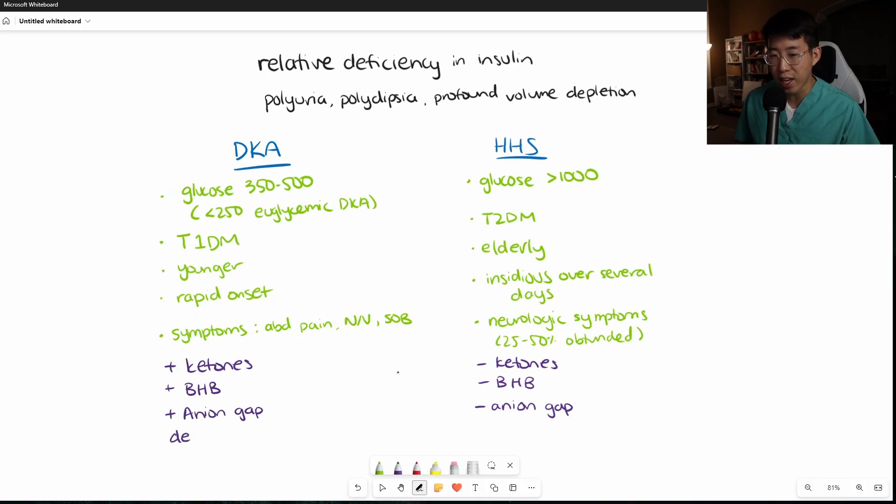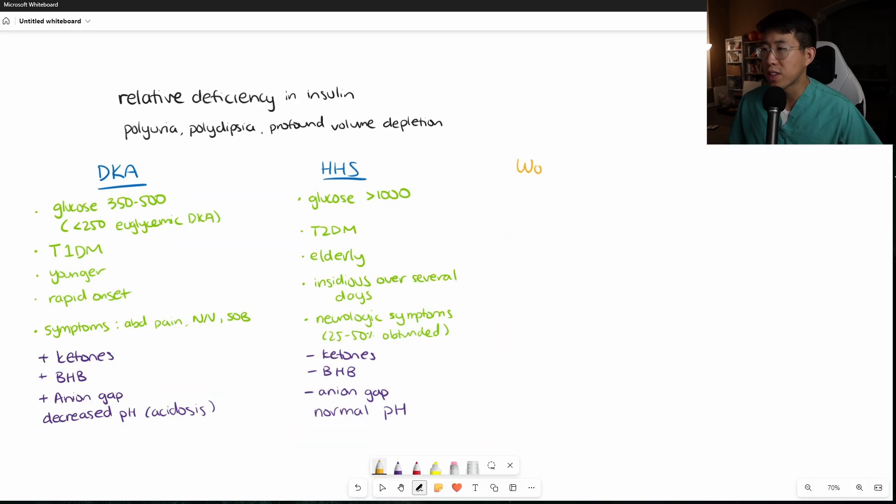Finally, for DKA, you are going to have a decreased pH, which goes with the acidosis part of the ketoacidosis. And in HHS, you are generally going to have a normal pH. So these are the biggest differentiating factors between DKA and HHS. Very important to know the different glucose ranges that you'll typically see when these conditions present, and the differences in the patient population, the symptoms, and some of the lab findings.